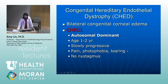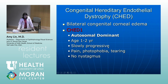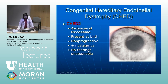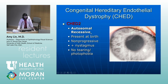CHED — congenital hereditary endothelial dystrophy — is a bilateral congenital corneal edema with two main types. CHED1 is autosomal dominant, presents at age one to two years, is slowly progressive, associated with pain, photophobia, and tearing, and there's no nystagmus. CHED2, by contrast, is autosomal recessive — and most autosomal recessive conditions are going to be worse. It's actually present at birth, it's not progressive, but there is nystagmus present and there's no tearing or photophobia as you see in CHED1.